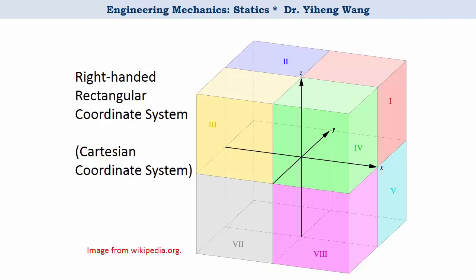These three number lines, known as the x, y, z axis, divide the space into eight octants, as demonstrated by the eight cubes with different colors in this image. The reason why this is called a right-handed coordinate system is because the positive directions of the three axes follow the right-hand rule.